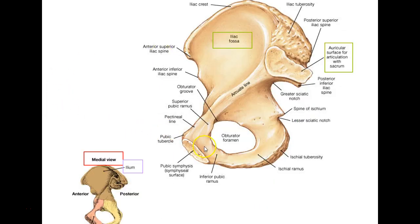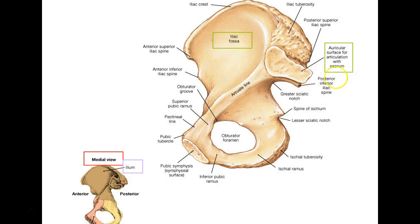What's this hole? The obturator foramen. What's this thing that looks like an ear? The auricular surface on the ileum, for articulating with the sacrum — the sacrum also has an auricular surface. Don't say 'articular'; since it looks like an ear, use 'auricular' — from the Latin 'auris' for ear.